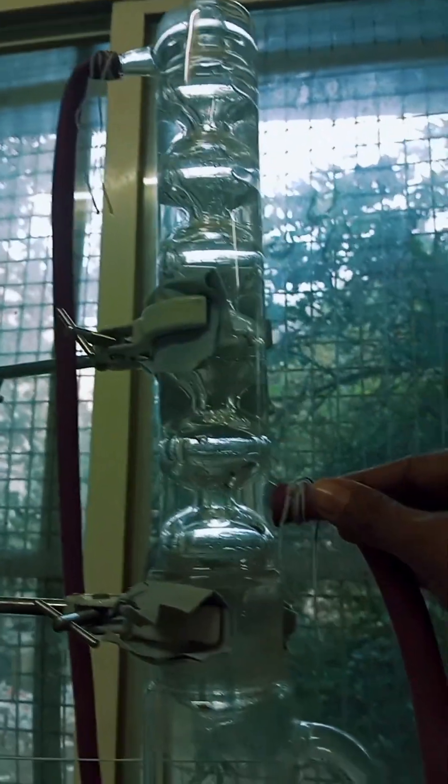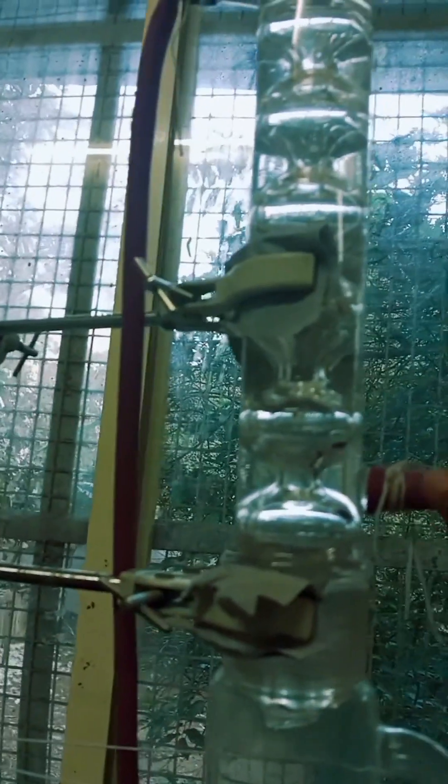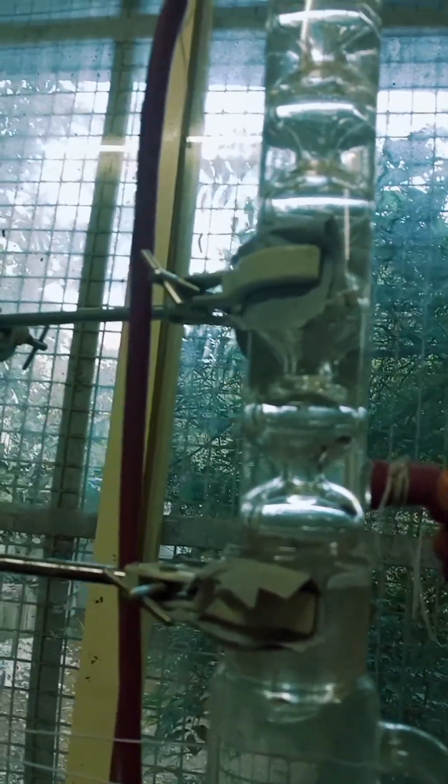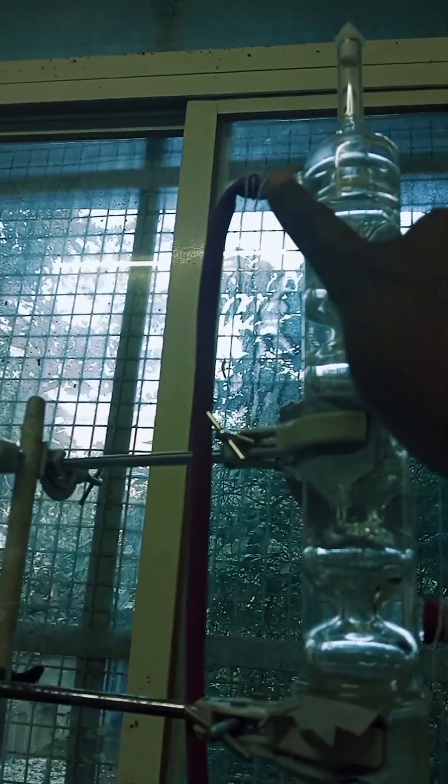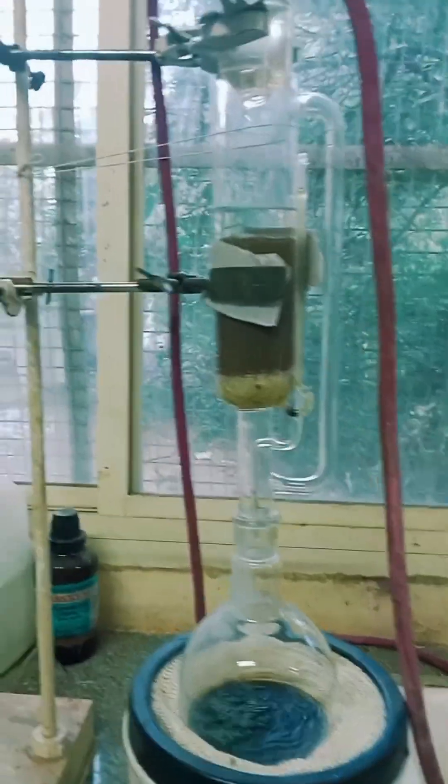This is the condenser. This is the cold water inlet, and this one is the outlet. From here, the cold water goes inside, and from the outlet, the hot water goes outside.